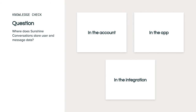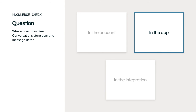Where does Sunshine Conversations store user and message data — in the account, in the app, or in the integration? Sunshine Conversations stores user and message data on the app level. Because one account can have multiple apps for different businesses, data is not shared between apps. And since apps need to share data across multiple channels, the data can't be limited to just one integration.